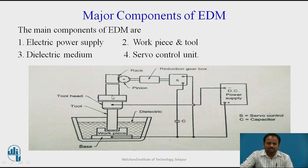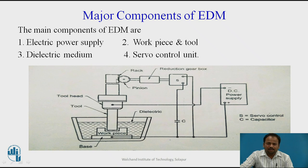Here we will see the setup of Electro-Discharge Machining. The Power Supply negative terminal is given to the tool and the positive terminal is given to the workpiece. Here, the Anode is acting as the workpiece and the Cathode is the tool. A Servo Control System controls the gap between them. There is a Rack with the tool and a Pinion, and this maintains the gap according to the control system throughout machining.